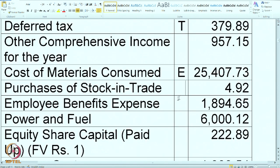Then purchases of stock in trade — the company is mainly manufacturing but purchases and resells very few items; the amount is very small but it is one of the expense items. Employee benefit expense — again an expense, so mark it as E. This is relatively less because it is a large-scale, highly mechanized operation, so employee cost is kept at a lower level. Power and fuel cost — again an expense at 6,000 crore.